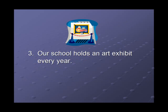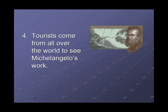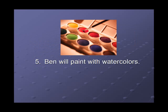Number three: our school holds an art exhibit every year. Can we change it? Yes. The verb is 'holds' and the object is 'an art exhibit.' Changed: an art exhibit is held by our school every year. Number four: tourists come from all over the world to see Michelangelo's work. Is it possible? No — the main verb is 'come' and there is no object. Number five: Ben will paint with watercolors. Is it possible? No — the verb is 'will paint' and there is no object; the verb is intransitive.